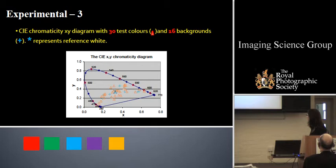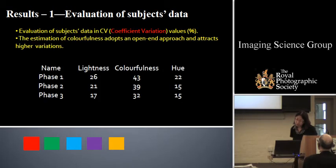So all the 30 test colors and the 16 backgrounds are represented in a plot in this diagram. The result: first is evaluation of subject data using the coefficient of variation values. In the tables is the mean coefficient of variation values for the lightness and colorfulness and hue respectively in the different frames.